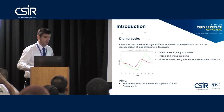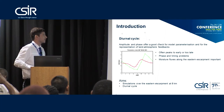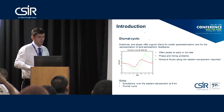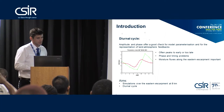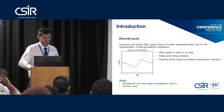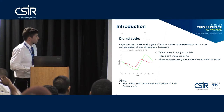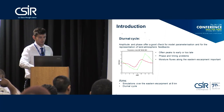Of particular interest with regards to modeling is getting the amplitude and the phase correct. We have seen in models that when we talk about the diurnal cycle, models often peak rainfall too early during the day, or in some cases too late during the day, which is a fairly big problem. The amplitude and phase offer a good check for model parameterization and for the representation of land-atmosphere feedbacks.